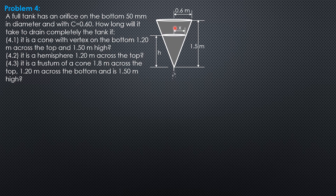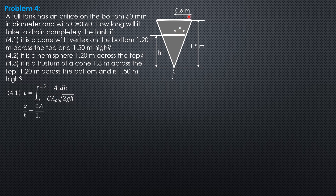For the first one, the cone: the general formula for the time it takes for the surface to drop from initial head to final head is T = ∫ A_s dH / (C · A_o · √(2gH)), where H is the head at any time. Since area S is changing, it is π·X², and we express X in terms of H by similar triangles: X/H = 0.6/1.5, so X = 0.4H.